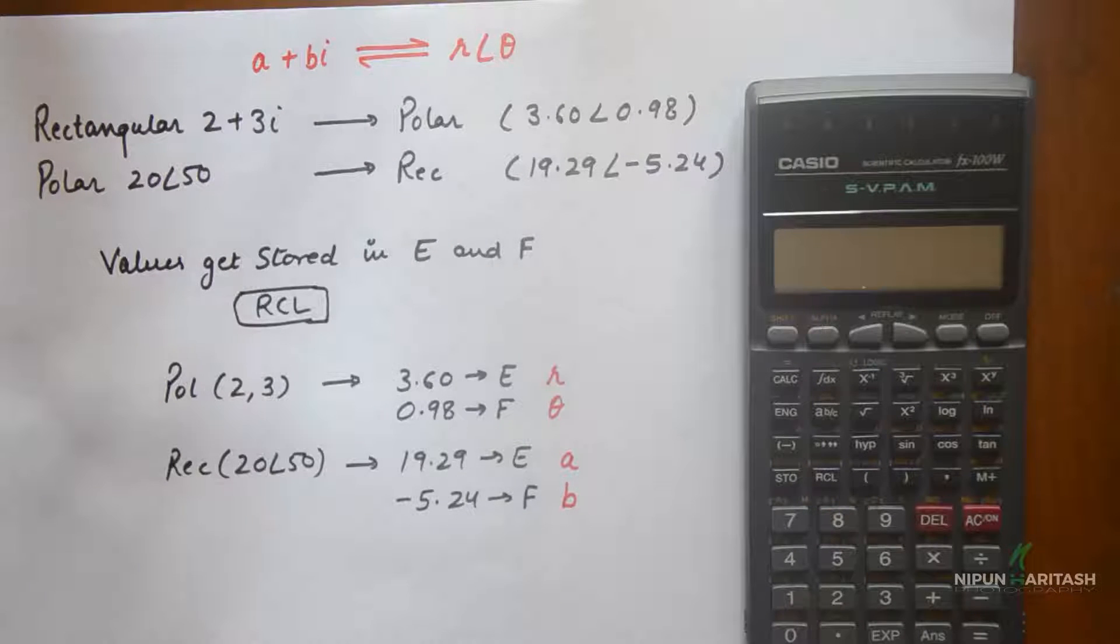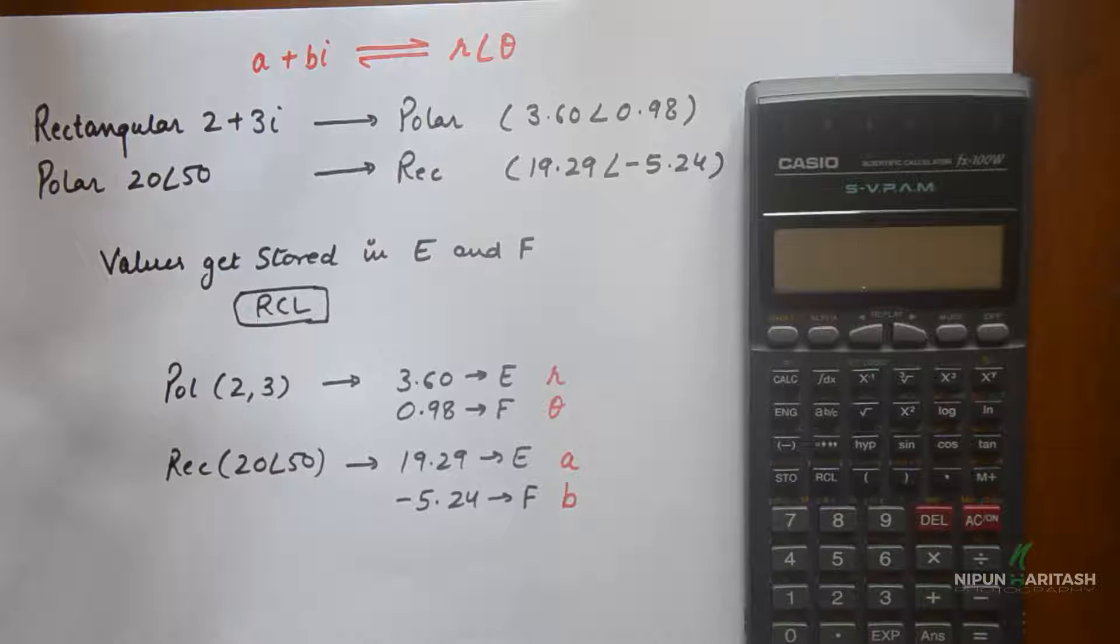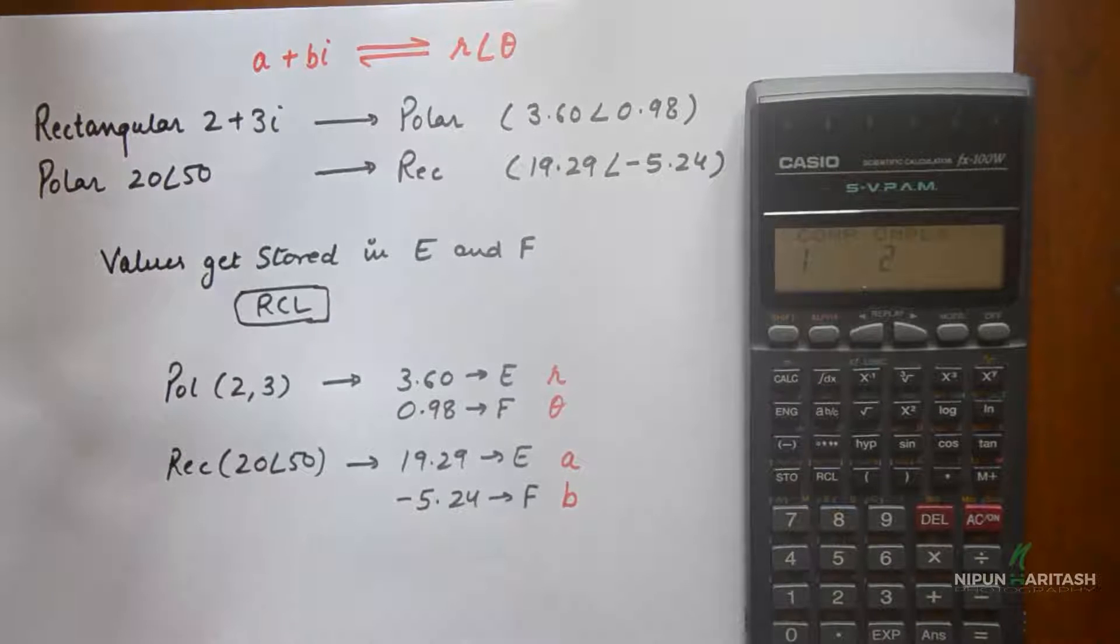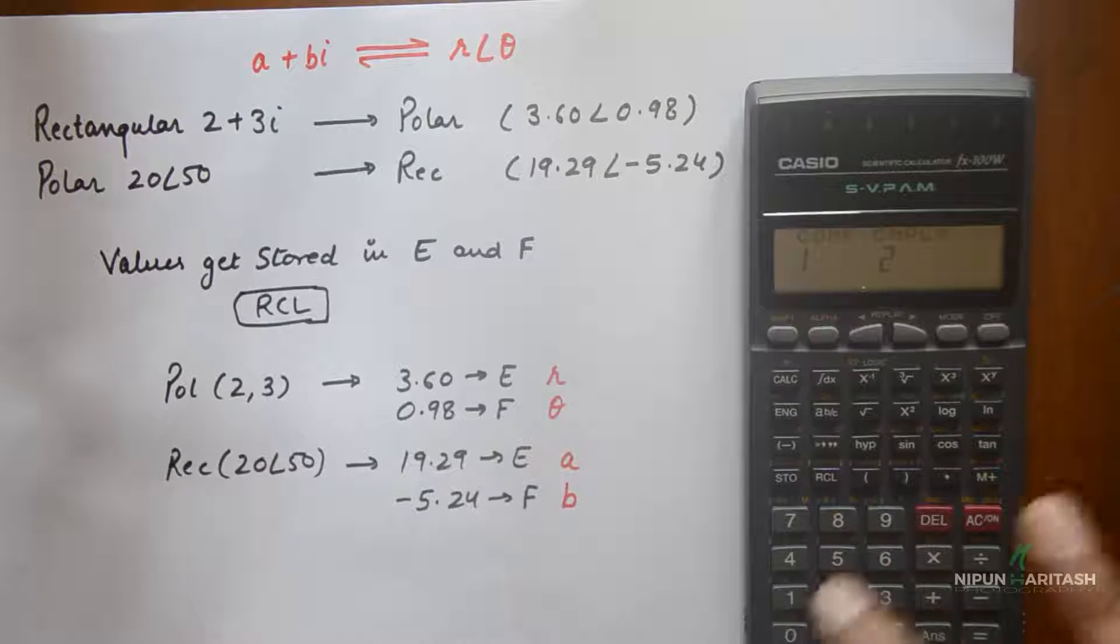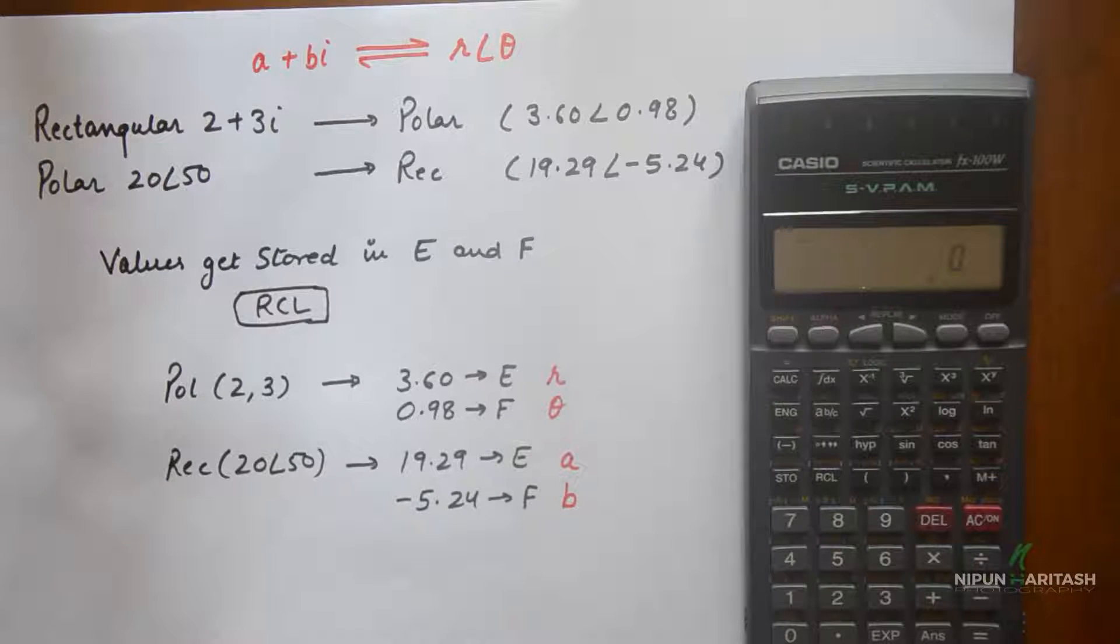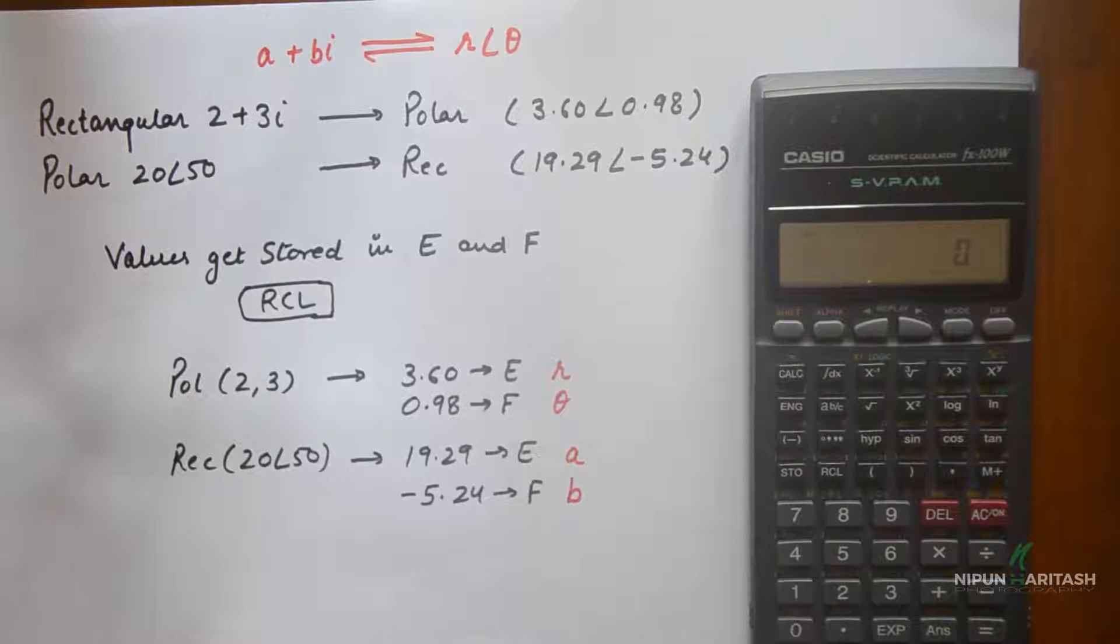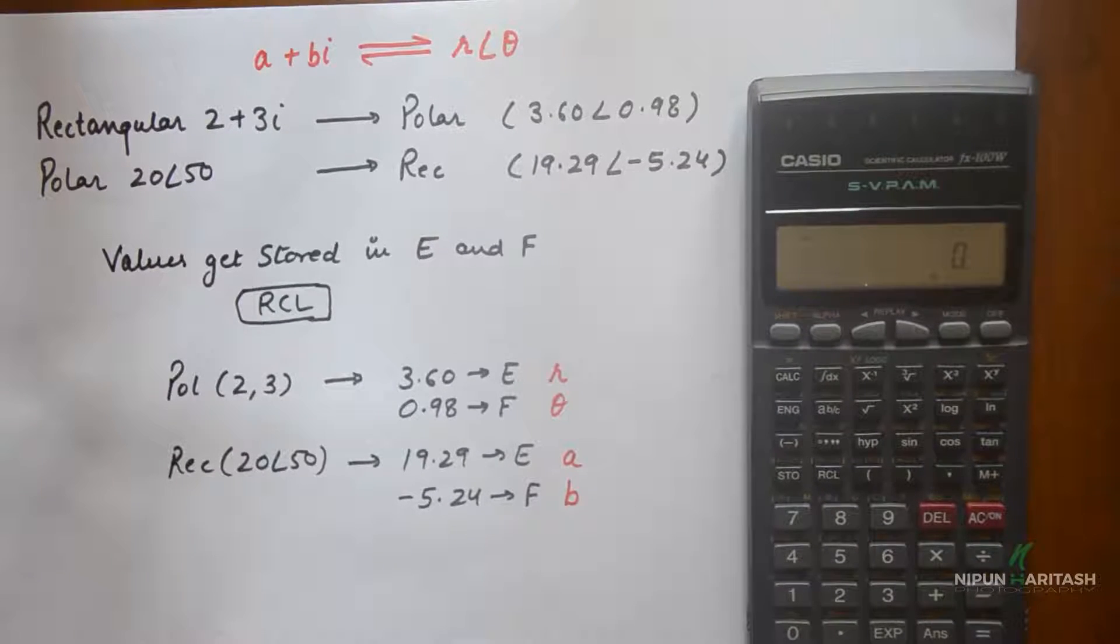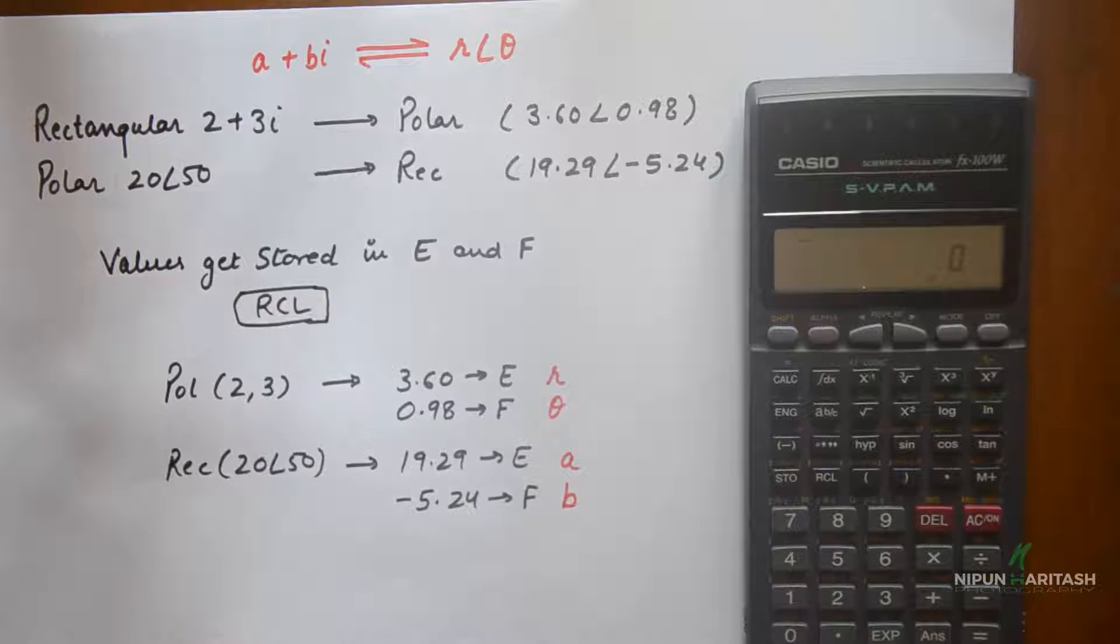Now there are a few things that we need to take care of. Firstly, we do not need to go to complex mode in order to perform polar and rectangular conversions, so we will stay in the normal computational mode. I have two problems in hand. We'll convert rectangular 2 plus 3i into polar.